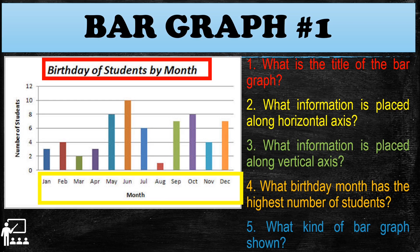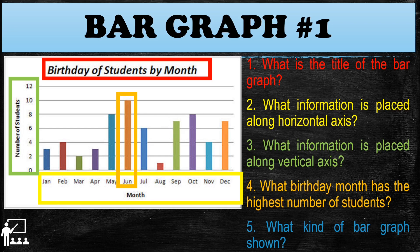For question two, what information is placed along the horizontal axis? We know that the horizontal axis is at the bottom, which is the month — from January up to December. For question three, what information is placed along the vertical axis? The vertical axis is shown on the side of the bar graph, and the information placed along it is the number of students. For question four, what birthday month has the highest number of students? We look for the data that has the highest number.